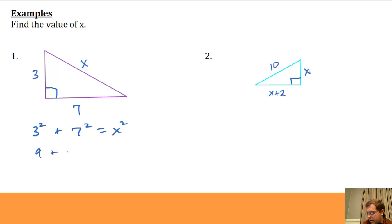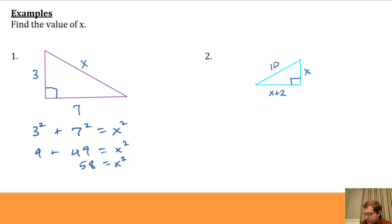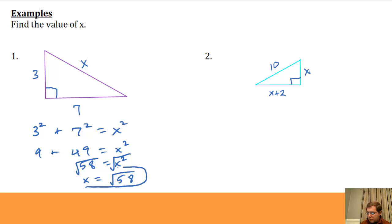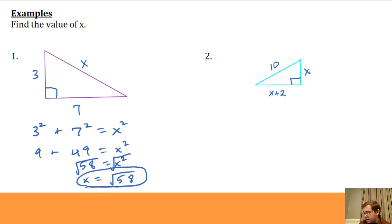Solving: 3 squared is 9, 7 squared is 49, so 9 plus 49 equals X squared. That gives 58 equals X squared. To find X rather than X squared, I take the square root of both sides, so X equals the square root of 58. That's a perfectly fine answer even though it has a square root — it's still a number, just not an integer. Checking whether the square root is simplified: no perfect square (9, 16, 25, 36) divides 58, so the square root of 58 is already simplified.